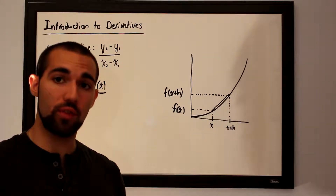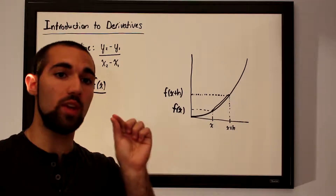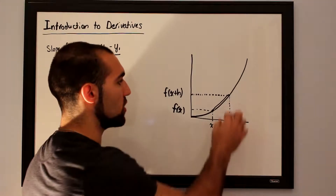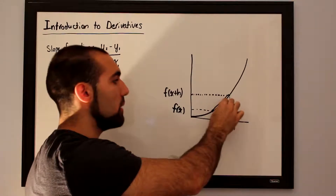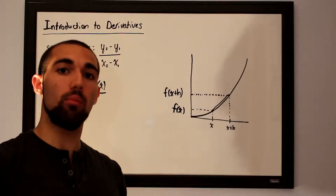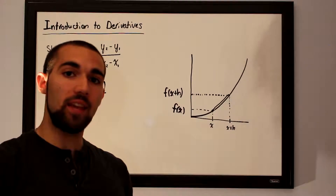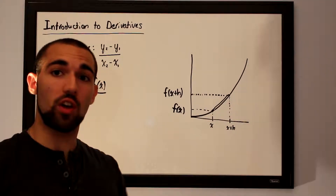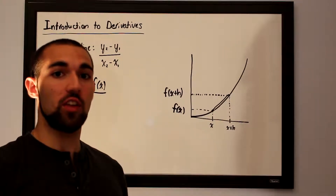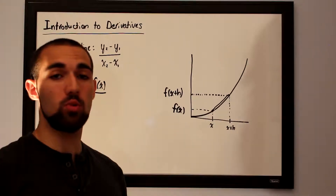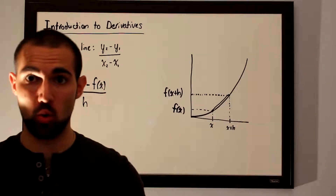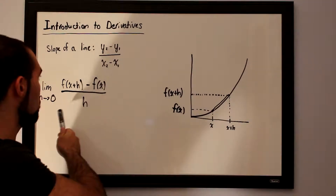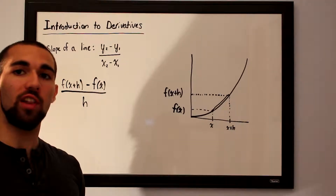To make this approximation as perfect as possible, we want to bring the two points as close together as we can. Bringing them closer gives a better approximation; bringing them even closer gives a much better one. We want to make the increase h so infinitely small that we can't tell the difference. So we introduce the concept of a limit and make h approach zero, so the distance between the two points is essentially zero. The limit as h approaches zero of f of x plus h minus f of x over h is what we call the limit definition of a derivative.